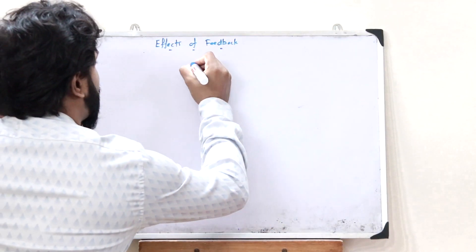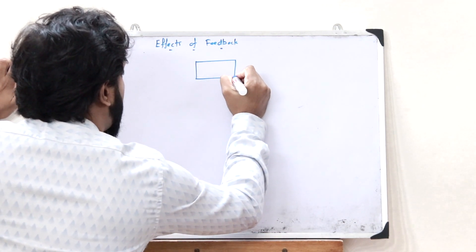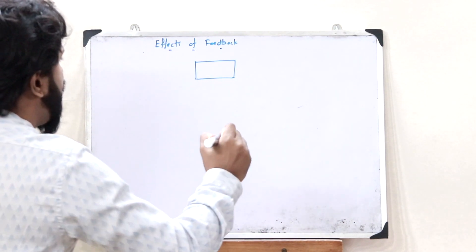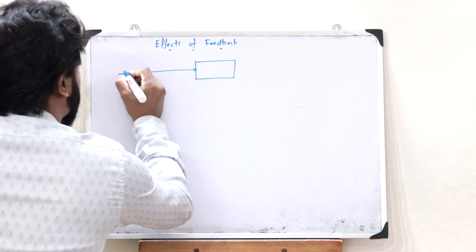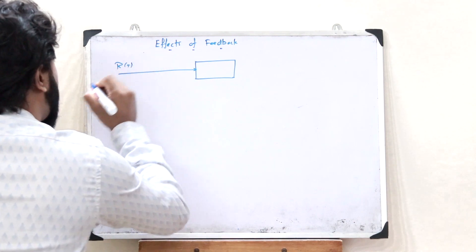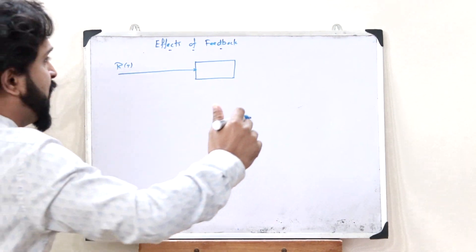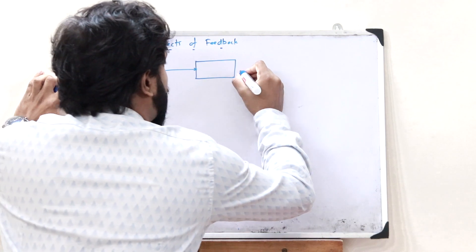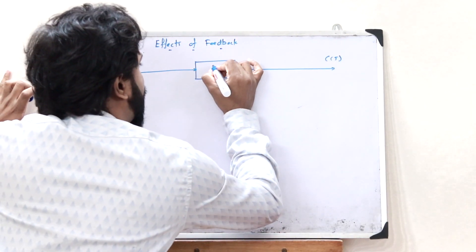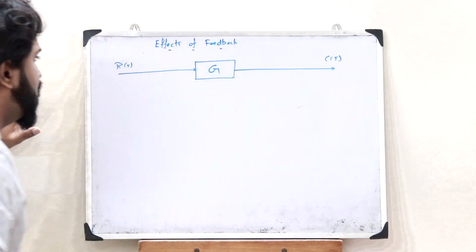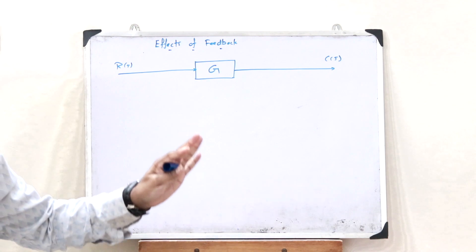Let us consider a particular control system. We are giving an input signal R(s) to this system, and we get an output signal C(s). Let the gain of this particular control system be G. This is the case of a control system where there is no feedback.